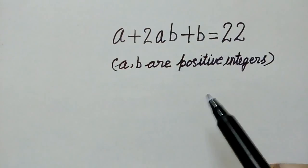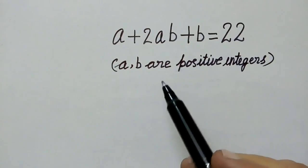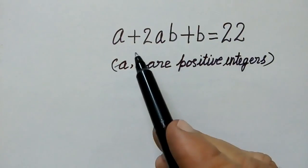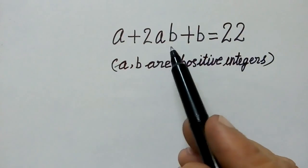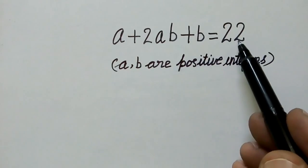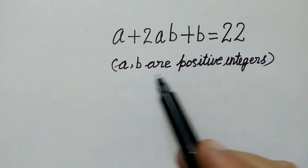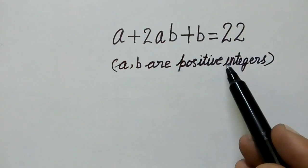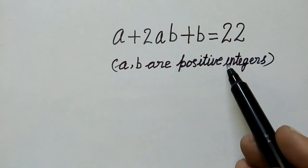Hi friends, good morning. Today we have a nice equation: a plus 2ab plus b is equal to 22, where a and b are positive integers.